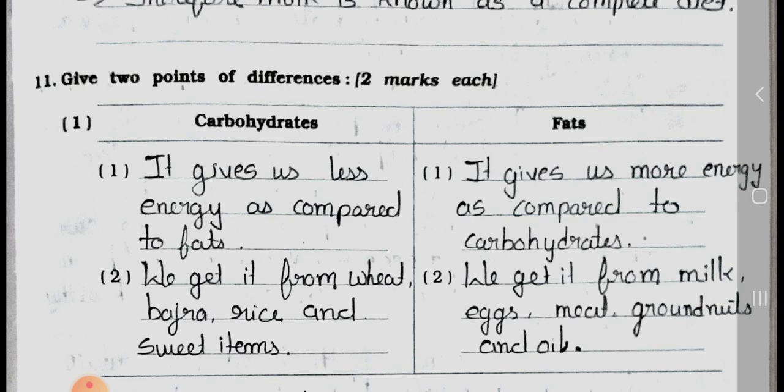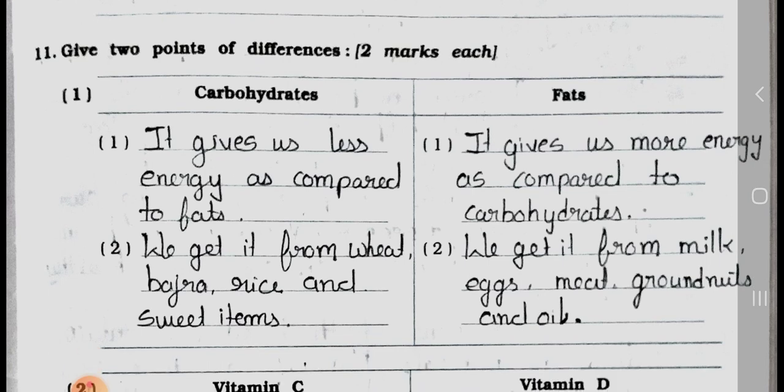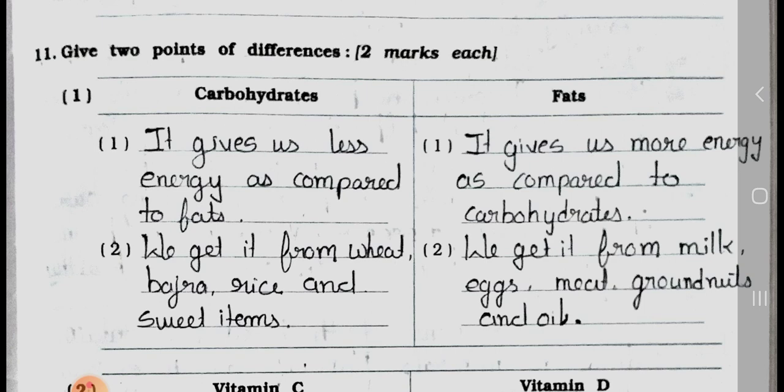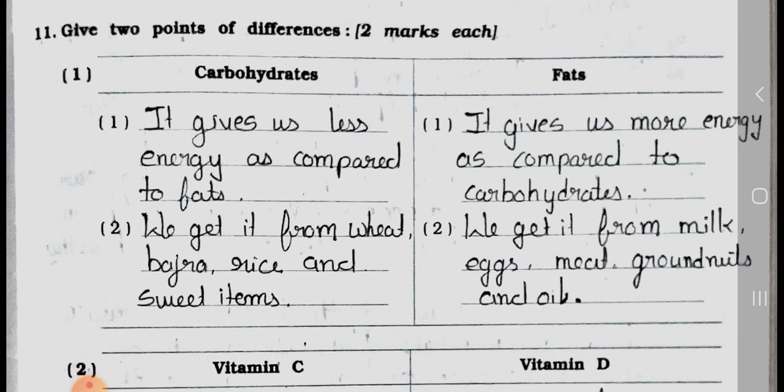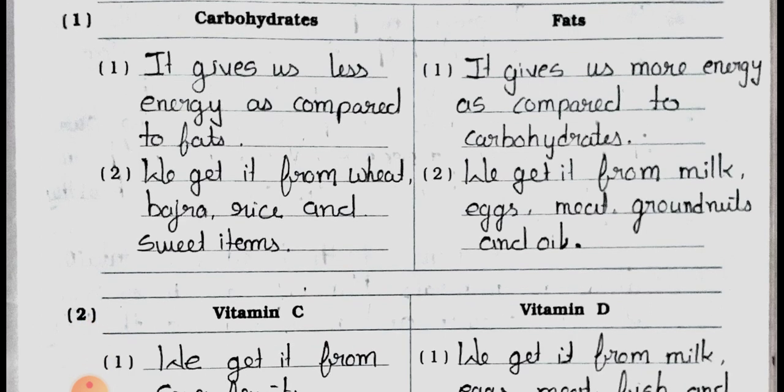Main 11: Give two points of differences — two marks each. Difference between carbohydrates and fat. Number one: carbohydrates give us less energy as compared to fats, and fats give us more energy as compared to carbohydrates. Point 2: We get carbohydrates from wheat, bajra, rice, and sweet items, and fats we get from milk, eggs, meat, groundnuts, and oils.